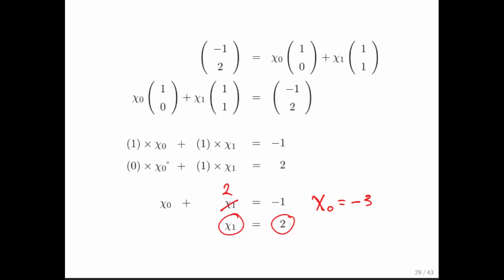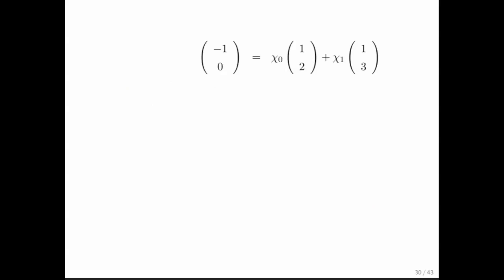And then you know that this should be minus 3 and chi 1 should be 2. And you have your linear combination of the vectors 1, 0 and 1, 1. Well, let's look at one where it's a little bit more complex. So what if we are given two vectors, the vector 1, 2 and 1, 3, and we're asked the question, how to create a linear combination of those two vectors that equals the vector minus 1, 0.